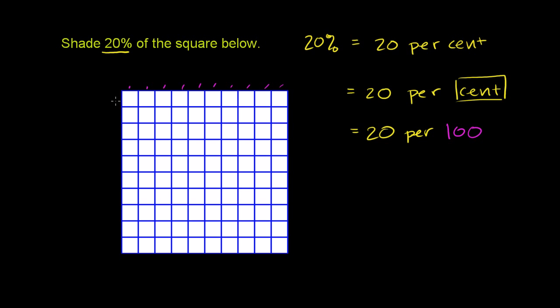If we go vertically, we have 1, 2, 3, 4, 5, 6, 7, 8, 9, 10. So this is a 10 by 10 square, so it has 100 squares here.